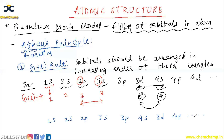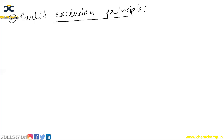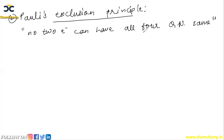The second rule is the Pauli Exclusion Principle. It states that no two electrons in an atom can have the same set of all four quantum numbers. If all four quantum numbers of two electrons were the same, it would mean both electrons are present at the same position, which is not possible. Therefore, inside an orbital we can have a maximum of two electrons — one with spin plus half (clockwise rotation) and the other with spin minus half (anti-clockwise rotation).